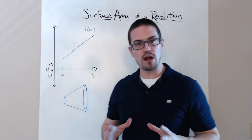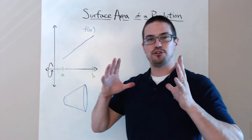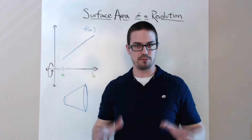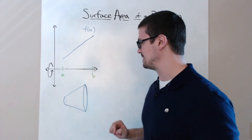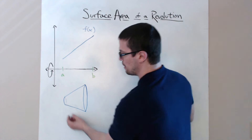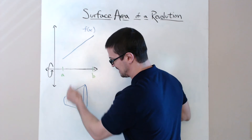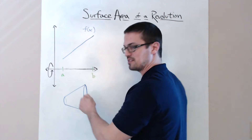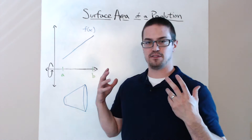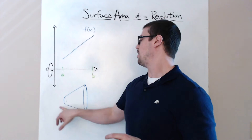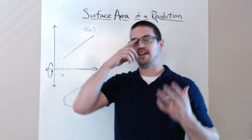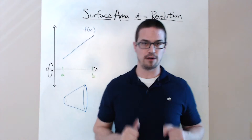The first thing we want to do is figure out a way of breaking this down into a really simple shape. That simple shape is a cylinder. We're basically going to be breaking this down into infinitesimally thin slices of cylinders, and then adding the surface area of those cylinders up along that interval. That's how we're going to find the surface area of this solid of revolution.